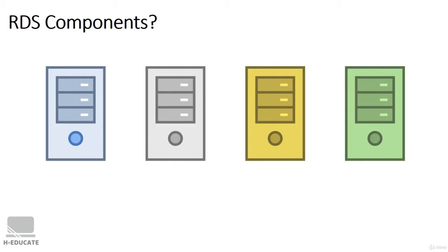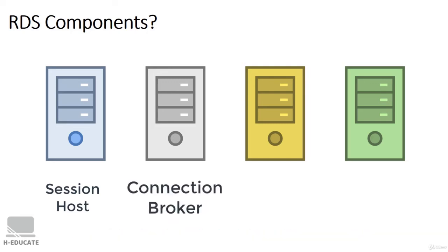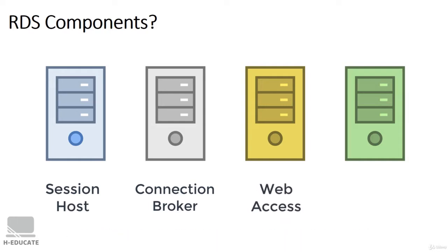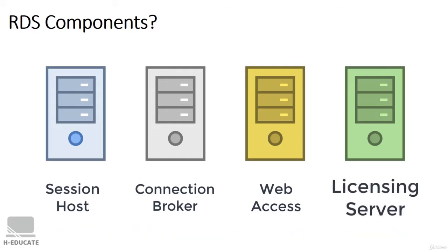Mainly RDS is built from four components or roles. The Remote Desktop Session Host, which is obviously responsible for hosting remote sessions and applications. We have the Remote Desktop Connection Broker that simply brokers the remote desktop connections. Also we have the Remote Desktop Web Access that provides a web interface or web page that makes it easy to access remote desktop resources. And lastly we have the Remote Desktop Licensing Server, which is obviously responsible for the licensing.